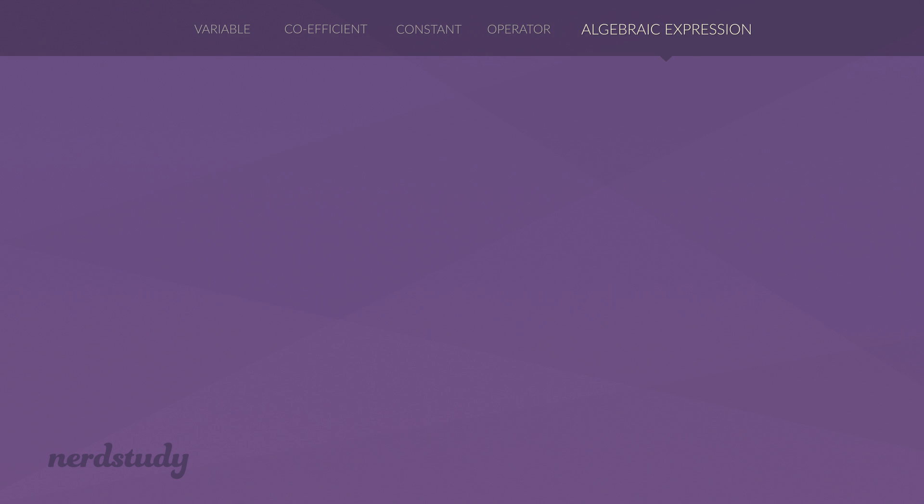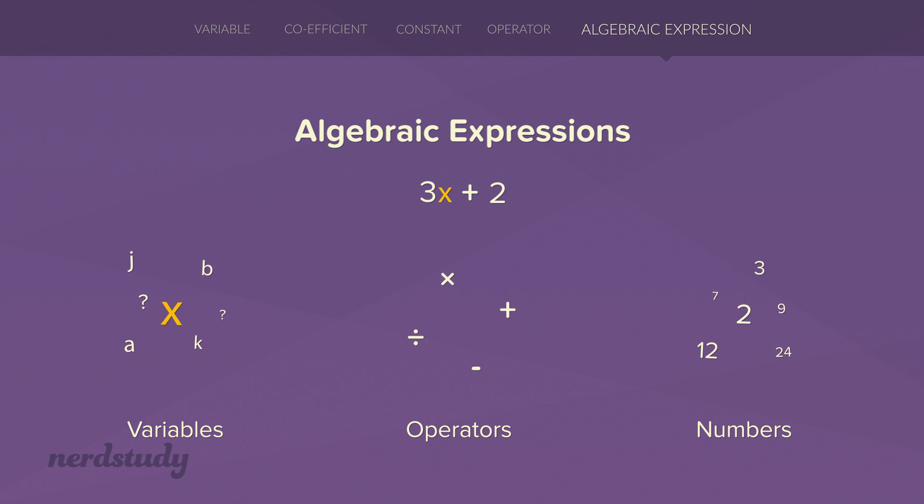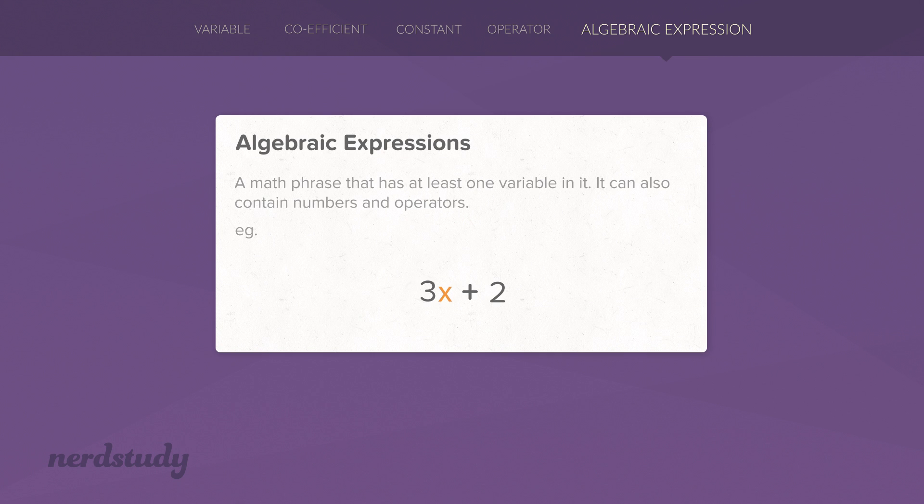Now, you might have seen variables, numbers, and operators come together to form math phrases such as 3x plus 2. These are called algebraic expressions. An algebraic expression is a math phrase that has at least one variable in it, and it can also contain numbers and operators.